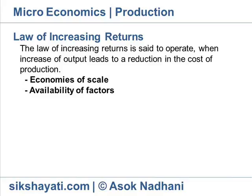Availability of Factors: If all necessary factors of production are easily available and can be used in suitable proportions, output may increase more than in proportion, and the cost of production naturally falls.